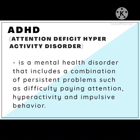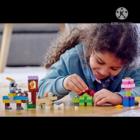It is a disorder that makes a person difficult to pay attention and control impulsive behavior. He or she may also be restless and almost constantly active. ADHD is not just a childhood disorder, but it could also happen in adulthood. Although the symptoms of ADHD begin in childhood, ADHD can continue through adolescence and adulthood.